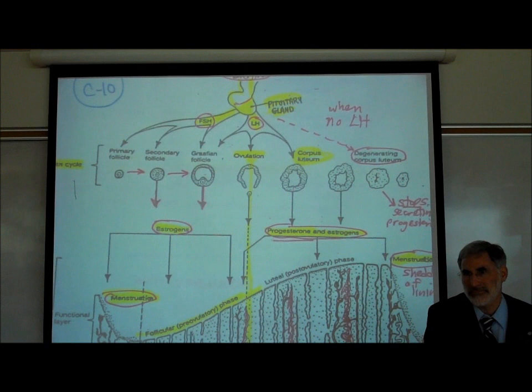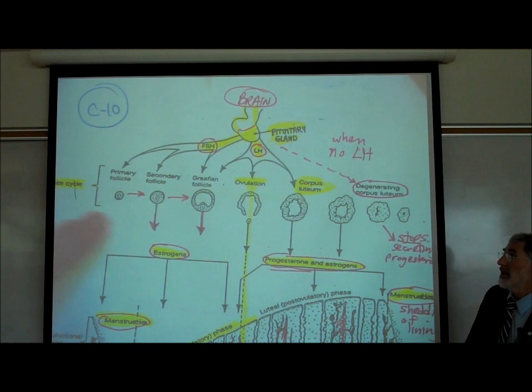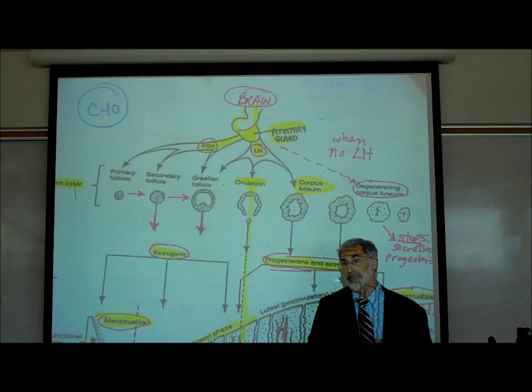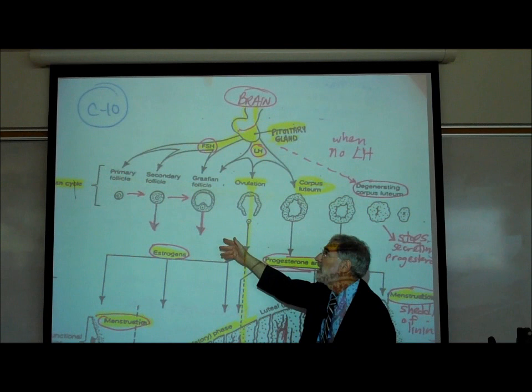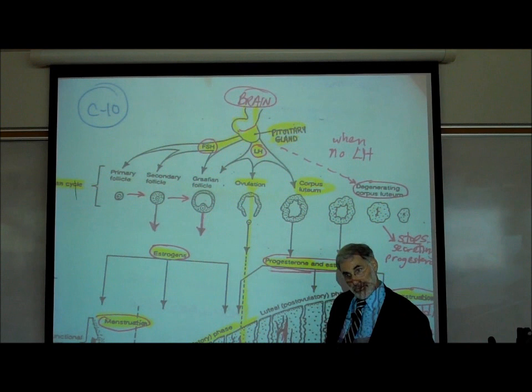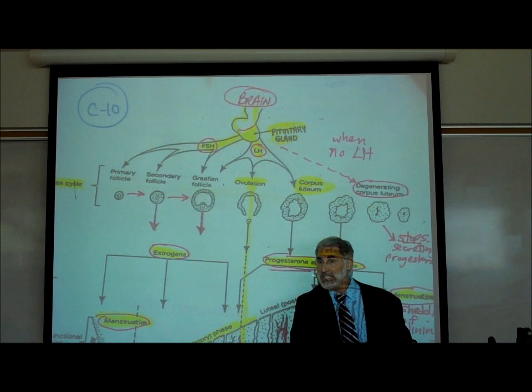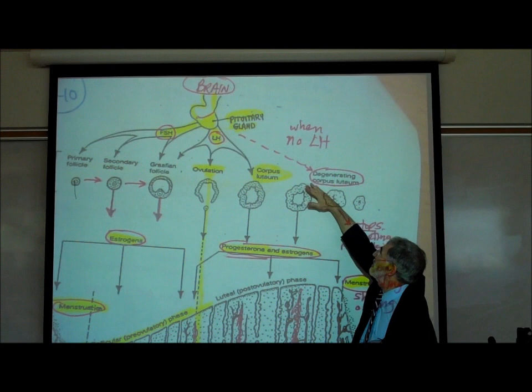Regarding fertility drugs: FSH causes the development of ovarian follicles. When doctors give a large amount of FSH to a couple who has been trying to get pregnant for years, multiple ovarian follicles develop and they ovulate multiple eggs at once, leading to multiple births. Around day 28, the pituitary stops releasing LH — there's a drop in LH, which causes a drop in progesterone, which causes menstruation. That's the sequence written on page C11.